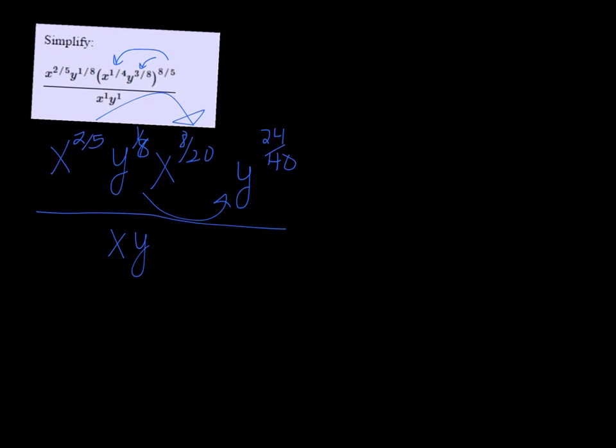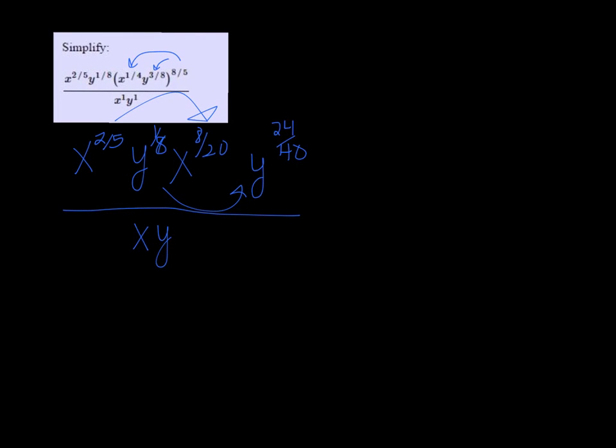So two-fifths plus eight-twentieths I can do right in the calculator. So I'm punching that in. Oops, enter. I get four-fifths, so x to the four-fifths.